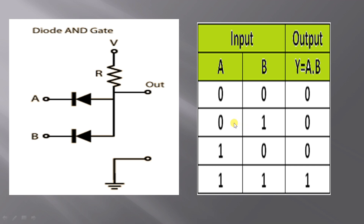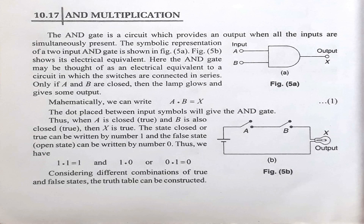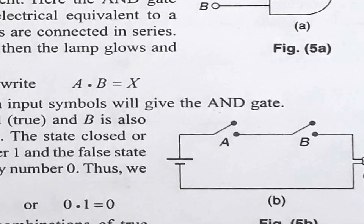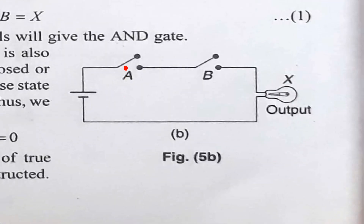This is the definition of AND gate. I shall explain the truth table using switches connected in series. A is a switch and B is another switch. These two are connected in series. There is a bulb and battery connected in the circuit as shown in this figure. The bulb is the output, represented by X. If the switch A is closed, it is represented by 1. If it is kept open, it is represented by 0.